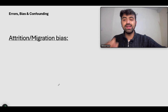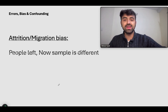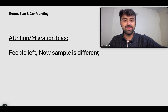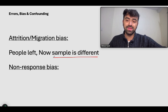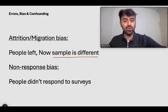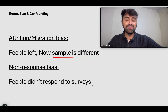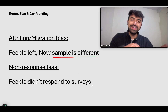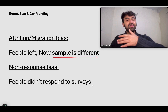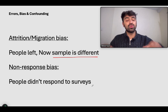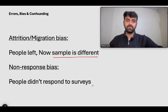How do you treat attrition or migration bias? People left, and now the sample is different — there's nothing you can do about it at that point. Non-response bias: people did not respond to surveys, and the very few who did cause the results to be very different from the general population — the results are skewed.